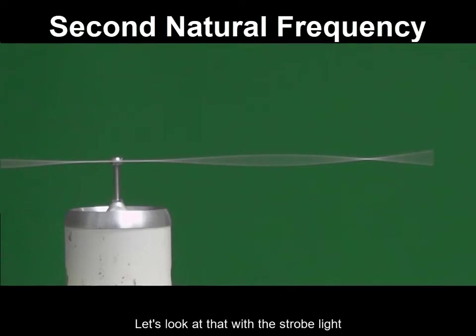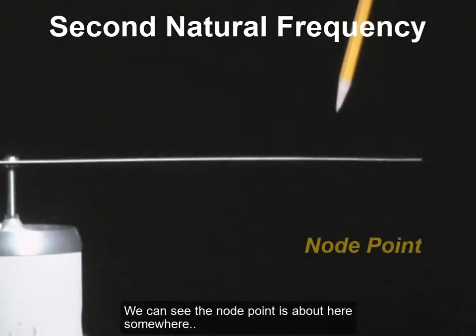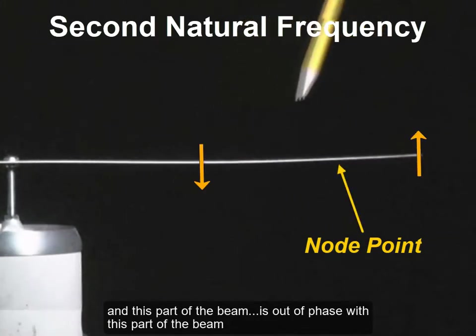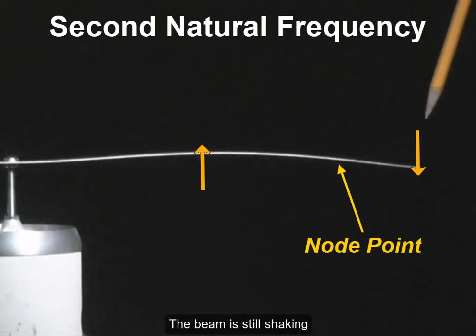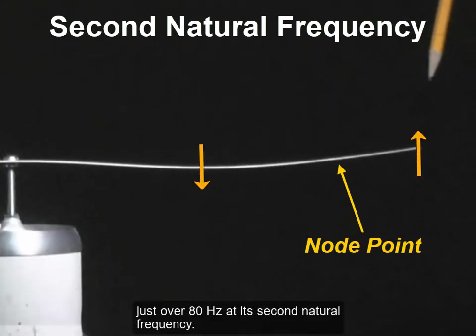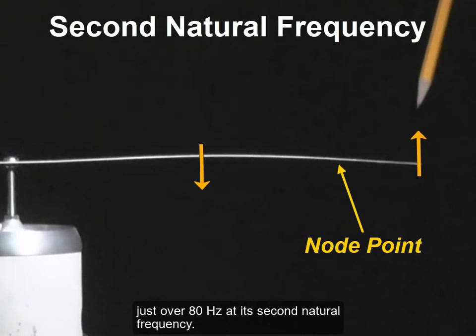And we'll see that this part of the beam is out of phase with this point here. Let's look at this with the strobe light. We can see the node point is about here somewhere, and this part of the beam is out of phase with this part of the beam. The beam is still shaking just over 80 Hz at its second natural frequency.